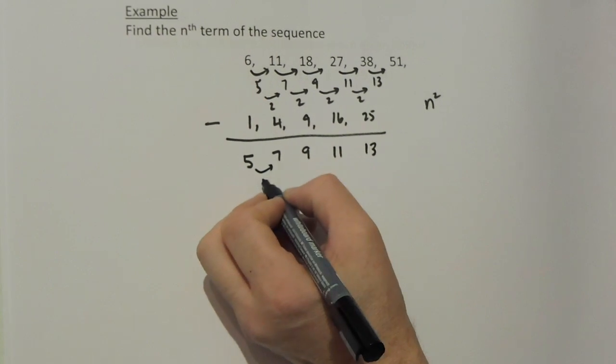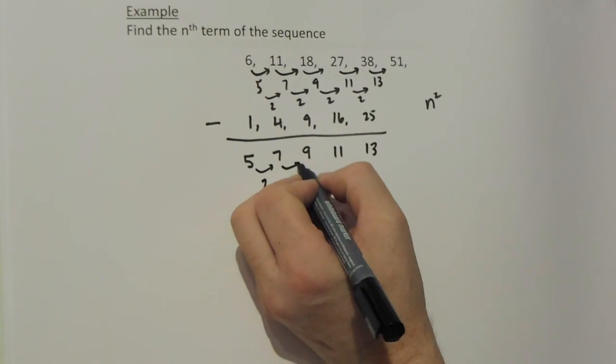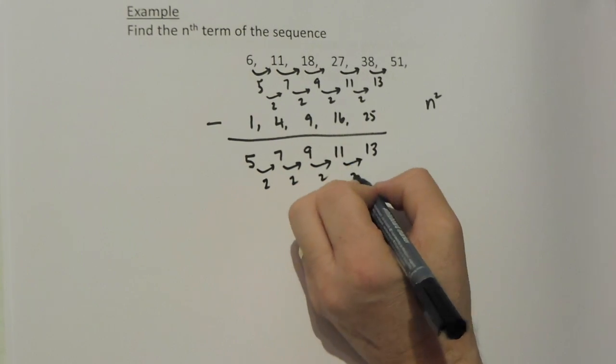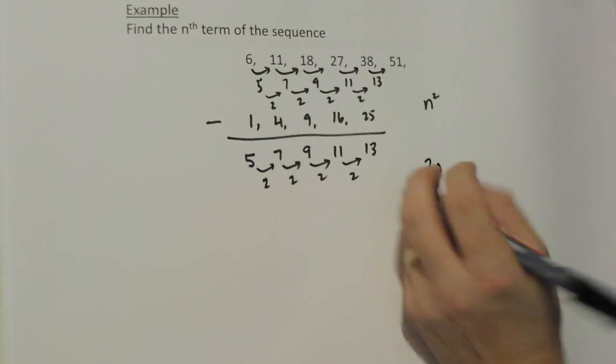This remaining sequence, I notice, goes up by 2, 2 again, 2 again, and 2 again. So it belongs to the 2 times table.